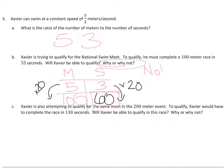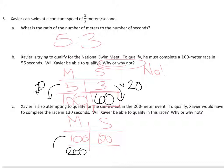But maybe in part C he could qualify for the 200 meter. He has to swim 200 meters in 130 seconds. From the first chart we know he can go 100 meters in 60 seconds. Now we double that to 200 meters by multiplying by 2, so we also multiply the 60 seconds by 2. So 60 times 2 is 120 seconds.